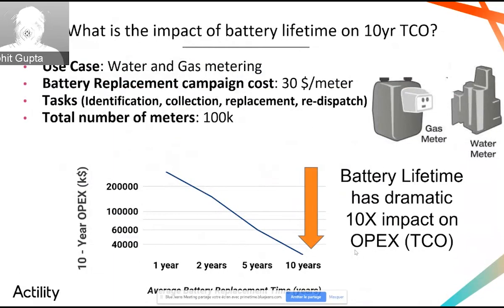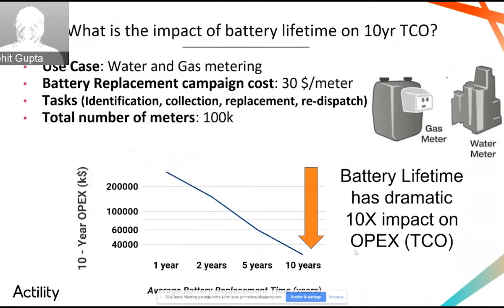Let's look at how battery lifetime impacts a 10-year TCO. Assuming water and gas metering — where meters are often located in indoor basements that are very hard to reach — if I assume battery replacement is a campaign costing $30 per meter (including identification, collection, replacement, and dispatch), and assuming about 100,000 meters, you can see that going from one-year battery replacement — replacing the battery 10 times over 10 years — to replacing it only once in 10 years gives you a 10x impact on OPEX and TCO. This has a very dramatic impact for end customers or enterprises deploying water and gas metering applications.